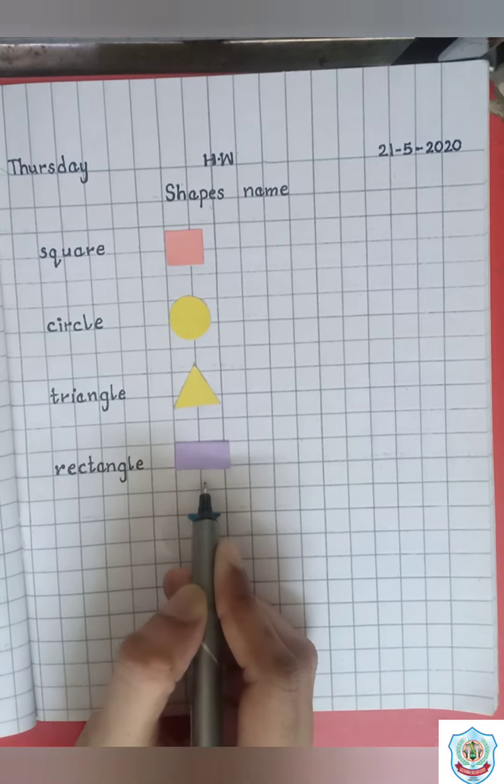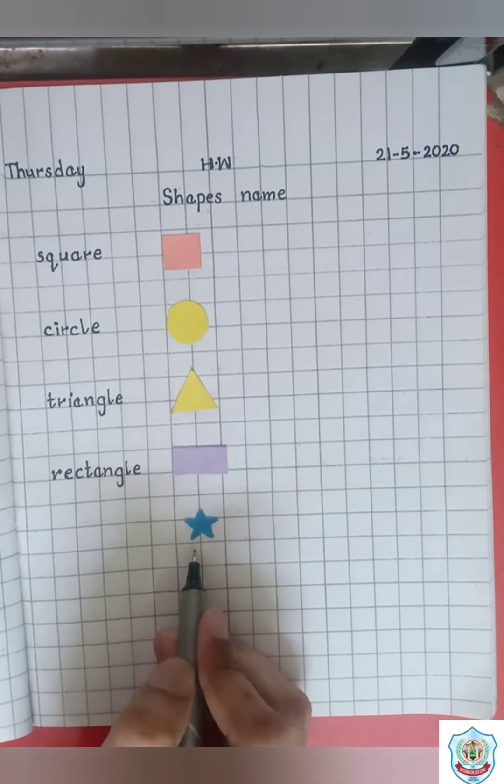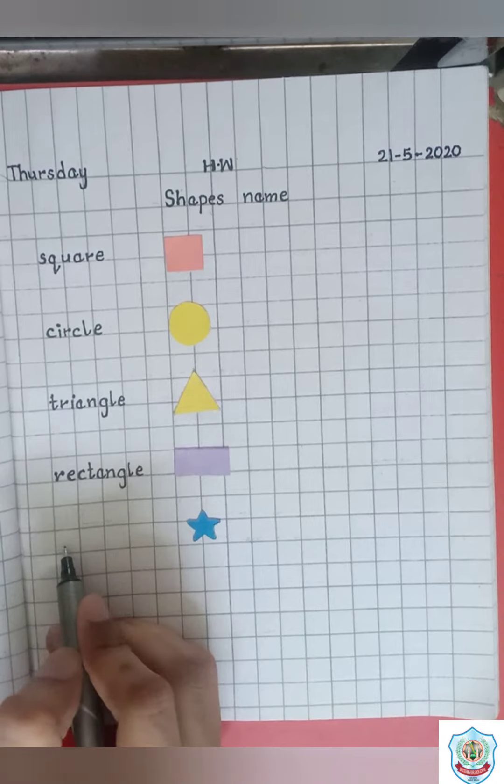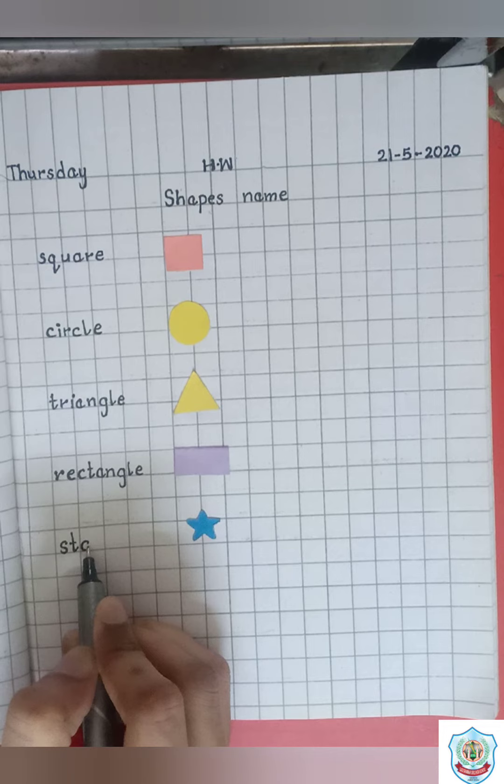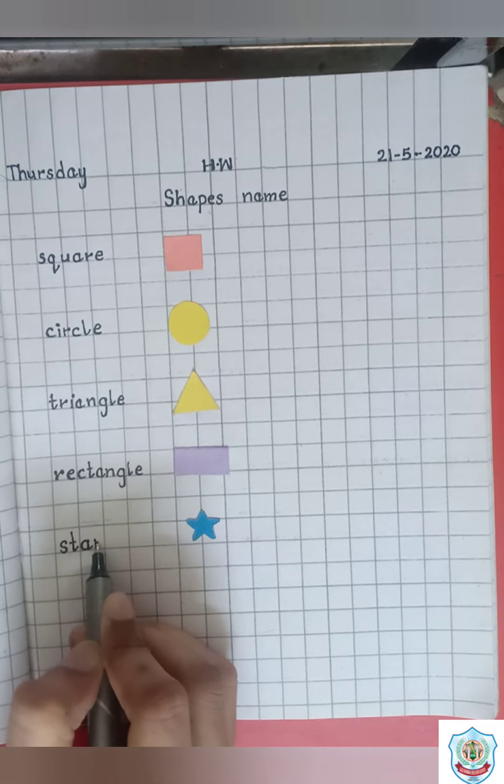Now write spell of star. S, T, A, R, star.